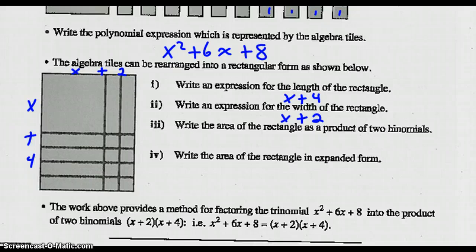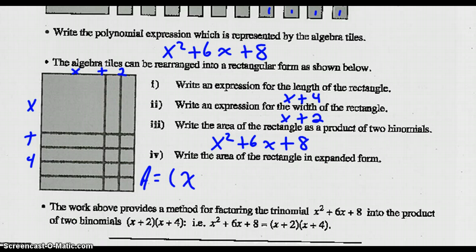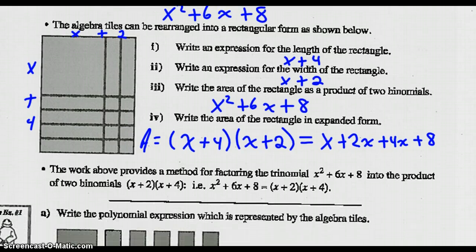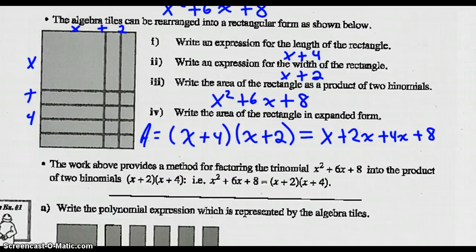The area would be x squared plus 6x plus 8. Or, if I want to write it out as a formula, area is width times length: x plus 4 times x plus 2. It says to write an expanded form, so I can expand out those two binomials: x times x is x squared, x times 2, x times 4, and 4 times 2. So if I've got the area x squared plus 6x plus 8, it means the same thing as x plus 2 times x plus 4. This is the factored form; this is the expanded form.